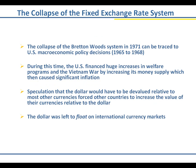The fixed exchange rate system collapsed in the 1970s, partly due to what was happening in the United States. Lyndon Johnson's Great Society programs increased domestic spending, and at the same time the Vietnam War had to be financed. This brought on increased money supply and inflation, leading to speculation that the dollar would have to be devalued relative to other currencies. It was devalued, and after 1971 the dollar was left to float on international currency markets — a flexible system. No longer was the Bretton Woods pegged fixed exchange system in effect.